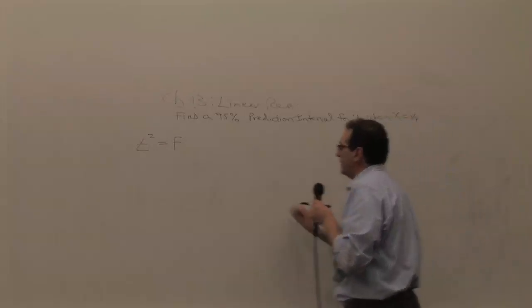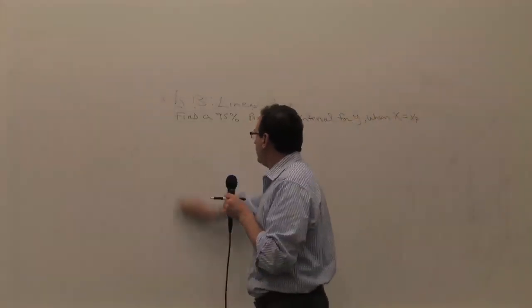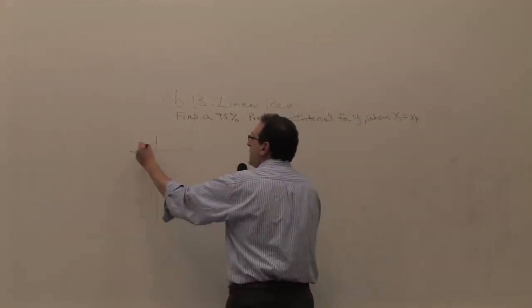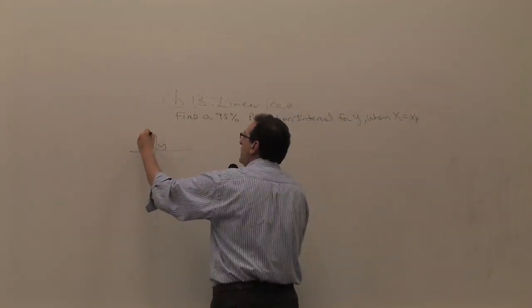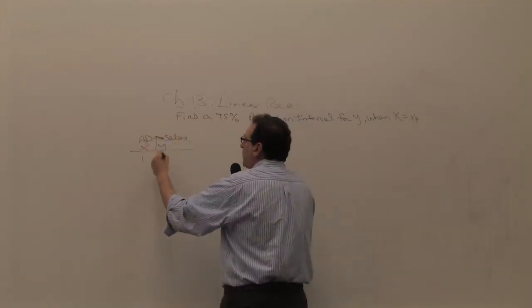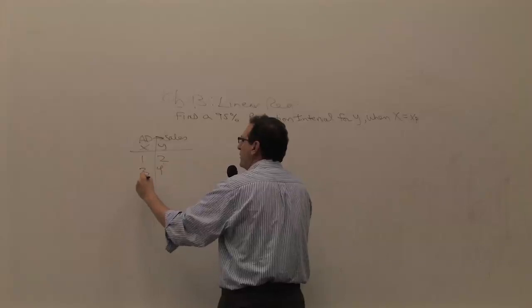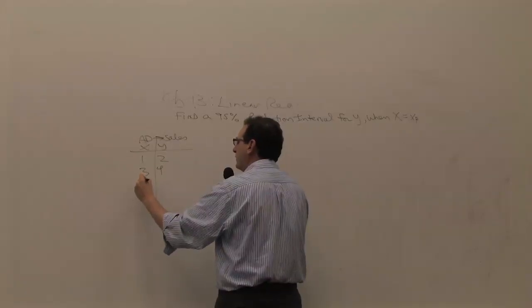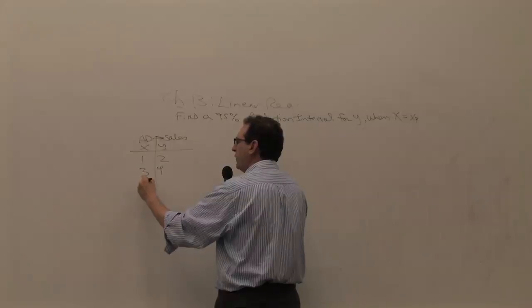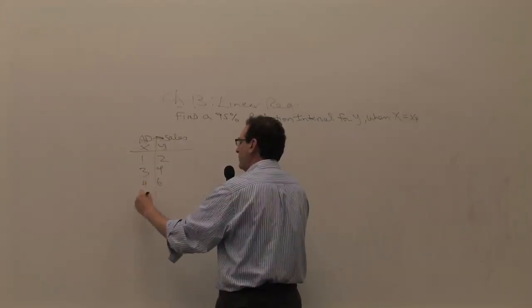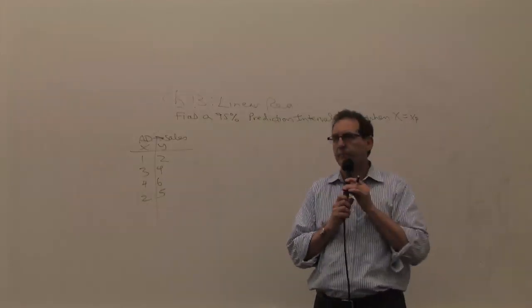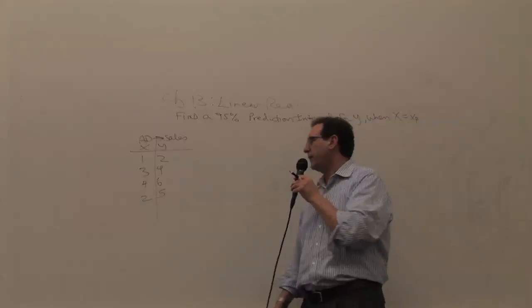We don't need this anymore. Let's take our example that we used throughout the whole chapter, where x and y happen to be advertising and sales, and the numbers were 1 and 2, 3 and 4, 2 and 5, 4 and 6. Were these the pairs of numbers in that order? Hello? Anybody out there? Okay, thank you.